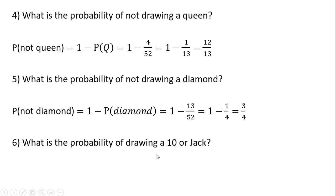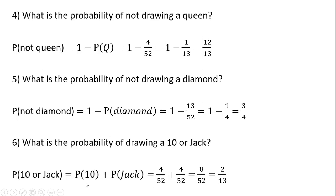What is the probability of drawing a ten or a jack? That's just going to be the probability of drawing a ten plus the probability of drawing a jack. There are four tens and there are four jacks, so we get two thirteenths.